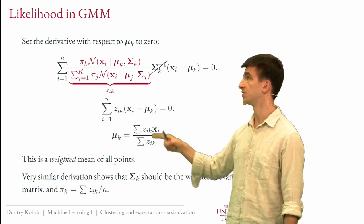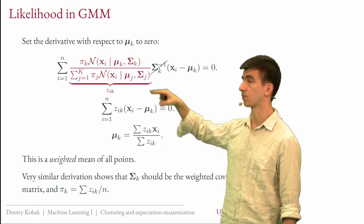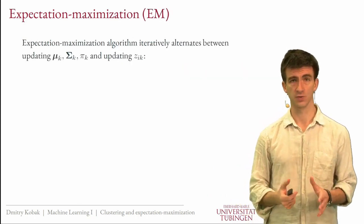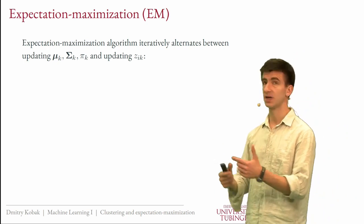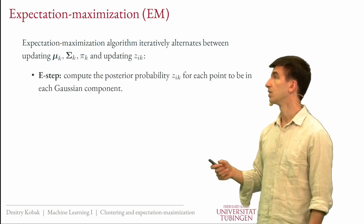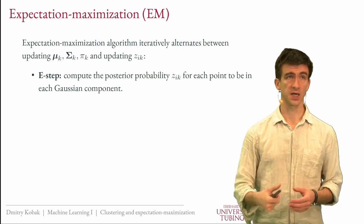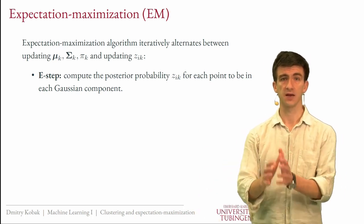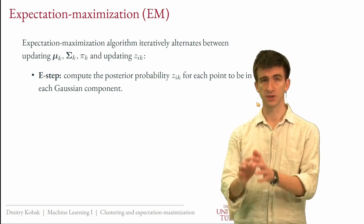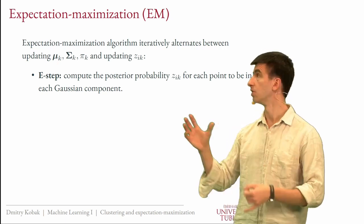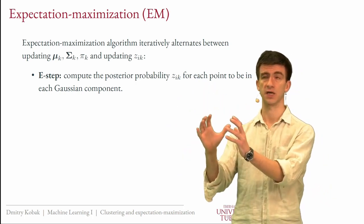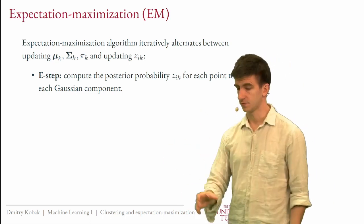We can handle this with an iterative approach called the Expectation-Maximization (EM) algorithm. In the E step (expectation step), we compute the posterior probabilities z_{ik} for each point to belong to each Gaussian component, given the current fixed parameters mu, Sigma, and pi. That's the entire E step — just computing these posterior probabilities.